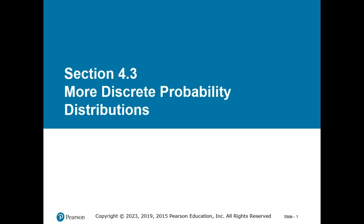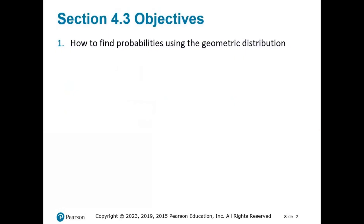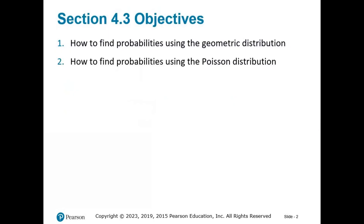Welcome to the last section of Chapter 4, everybody — Chapter 4, Section 3: More Discrete Probability Distributions. Last section we focused on one type of discrete probability distribution, a binomial distribution. This time we're going to add two more to the list: how to find probabilities using the geometric distribution, and how to find probabilities using the Poisson distribution.